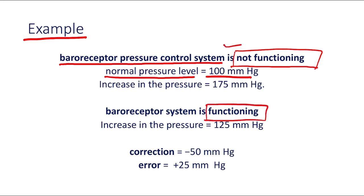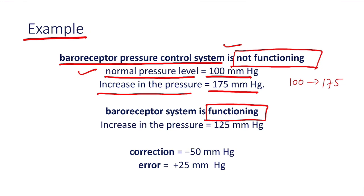First, we will see when the system is not functioning. The normal pressure level is 100 mmHg, and there is an increase in pressure — it rises up to 175 mmHg. So pressure increases from 100 to 175 mmHg, meaning pressure increases by 75 mmHg.